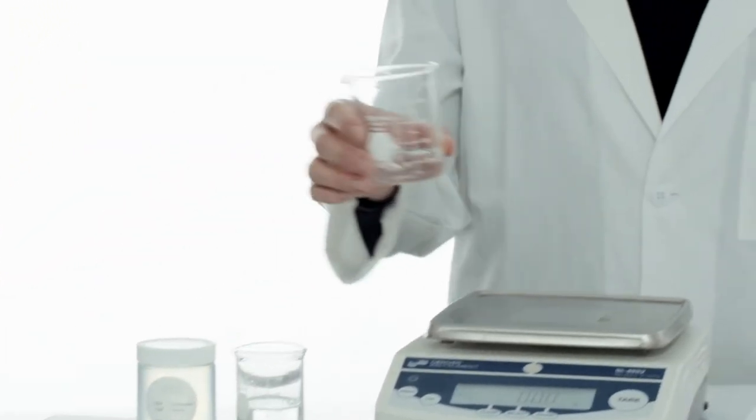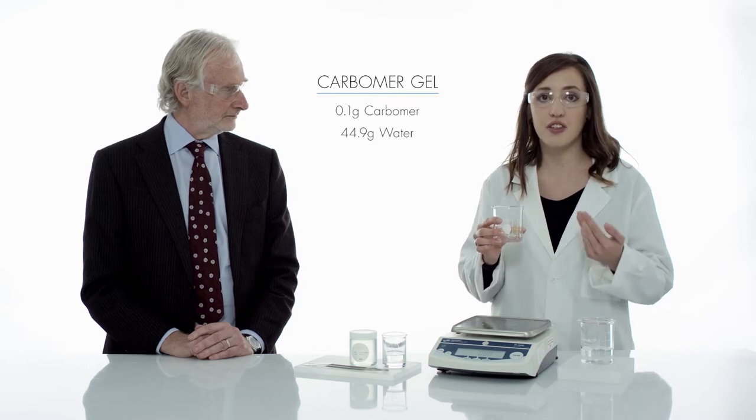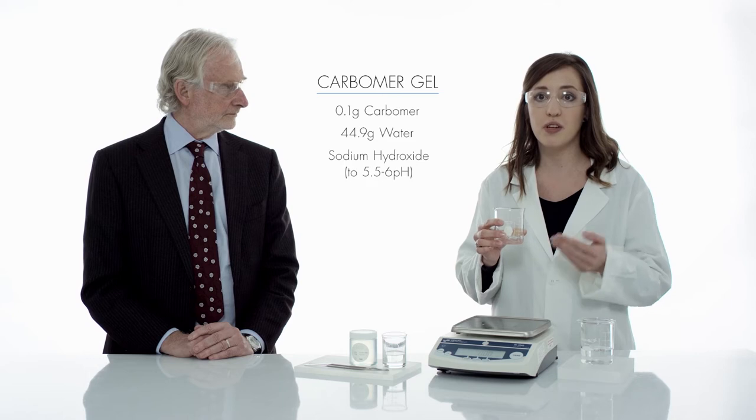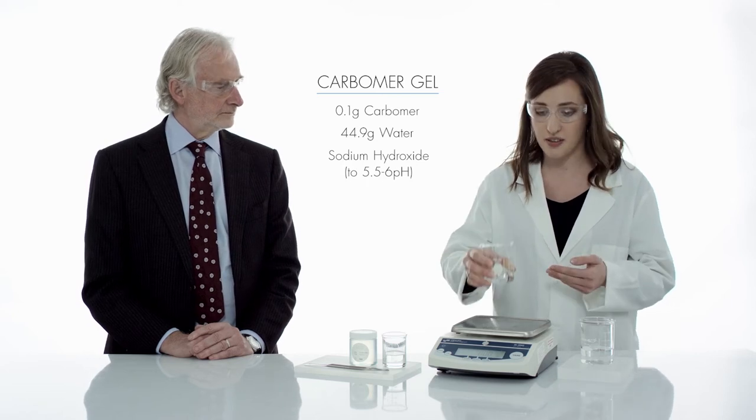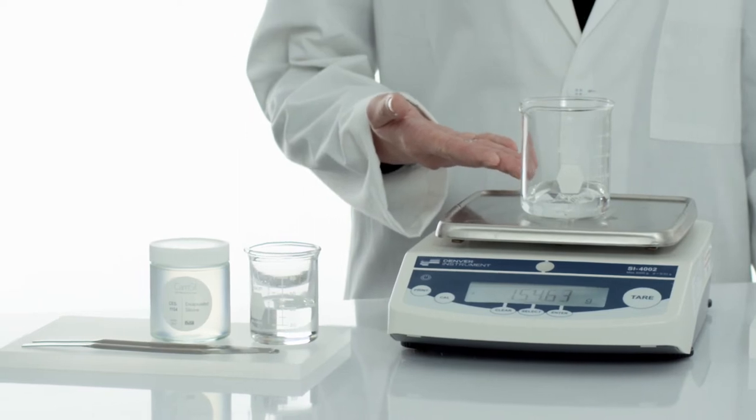I have prepared a carbomer gel in which I have dispersed 0.1 g of carbomer into 44.9 g of water. Then I have neutralized it with sodium hydroxide to reach a pH between 5.5 to 6. Now, at this stage, you see that the formulation is transparent.